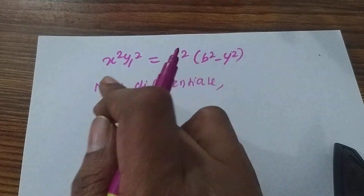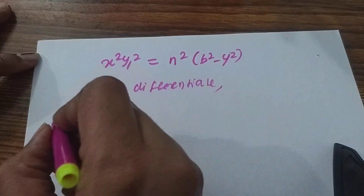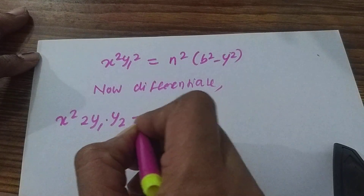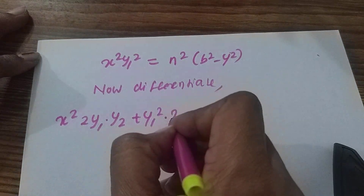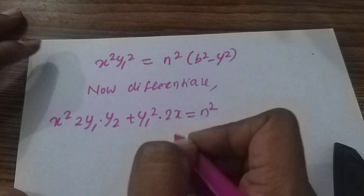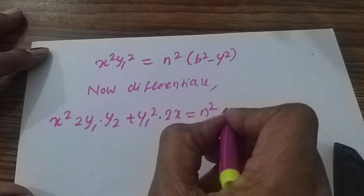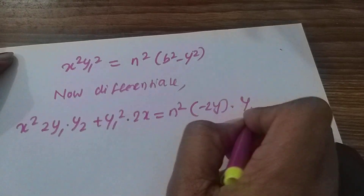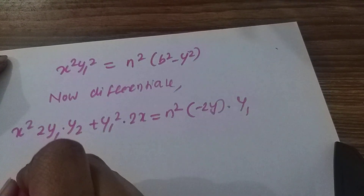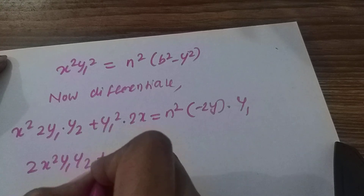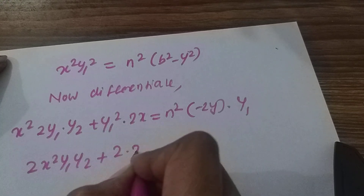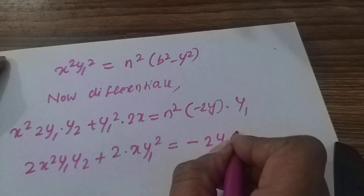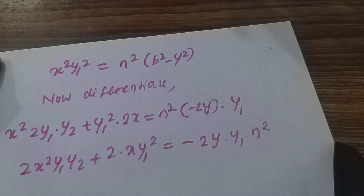Now apply the product rule. First function, second function derivative: x squared y2 plus y1 squared times 2x equals n squared times b squared zero. Minus 2y into derivative y, giving y1. So 2x squared y1 y2 plus 2x y1 squared is equal to minus 2y into y1 times n squared.